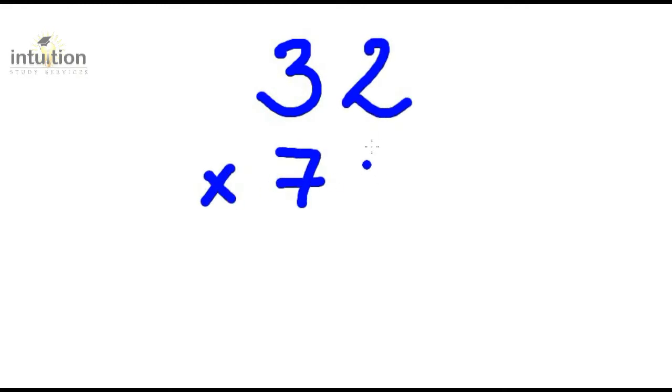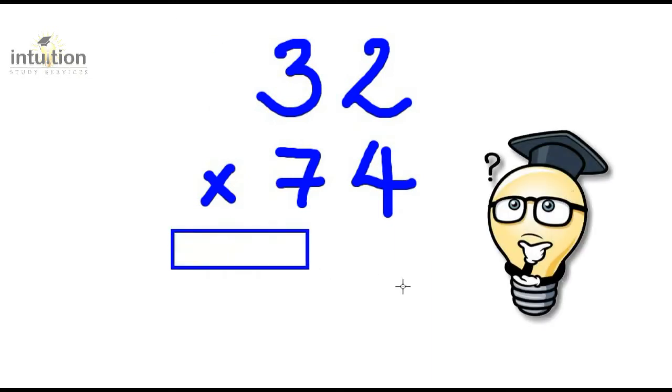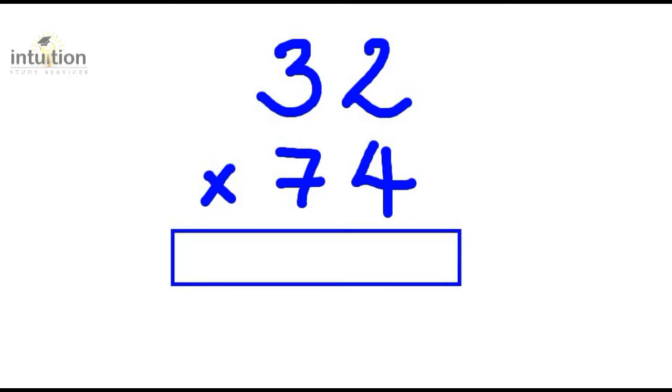Okay, so let's take a look at another example. Let's consider 32 times 74. Let's see how quickly you can do that. Give it a go. Okay, time's up. If you got 2,368, well done. But if not, don't worry. We can use the down, down, cross method to get the answer.